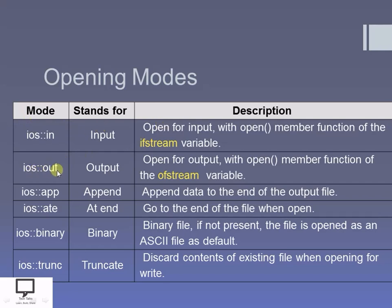The another mode is the 'out' mode, which stands for output mode. Output is nothing but writing on the file. For this I will use the ofstream class. The object of the ofstream class is used to access the open member function with the mode ios::out for writing purpose.